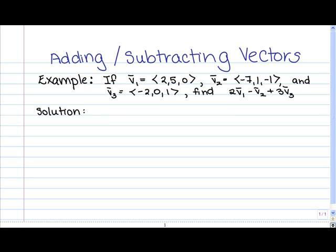Once you're done multiplying the vectors by the scalars, you're going to have to perform the addition and subtraction indicated in the question. Remember that to add or subtract vectors, you add or subtract the individual components. So you take the first components of the vectors and add or subtract them accordingly, then do the same for the second and third components. Go ahead, try this out, hit the pause button, and hit play when you're ready to continue.